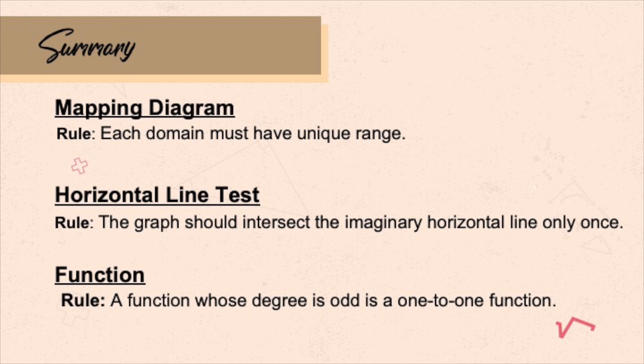To summarize the three methods: For the mapping diagram, the rule is every x must have only one image of y. For the horizontal line test, the imaginary horizontal line should cross the graph only once. Using the given function itself, the degree of the function must be odd. That is how you identify if a function is one-to-one or not.